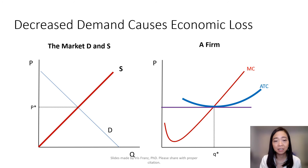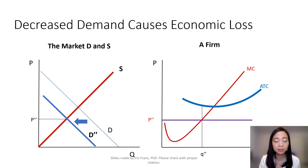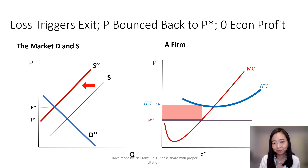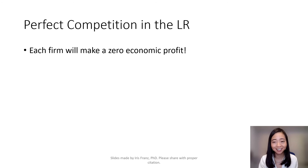Now what happens if there is a decrease in market demand? That will cause our demand curve to shift to the left. As a result, the market price is going to go down, and our existing firms will be suffering an economic loss. Some firms suffering economic loss will exit the industry, which will shift our supply curve to the left. As a result, the price will bounce back to P*, and then existing firms will be making a zero economic profit again. So we conclude that in the long run, every perfectly competitive firm will be making a zero economic profit.